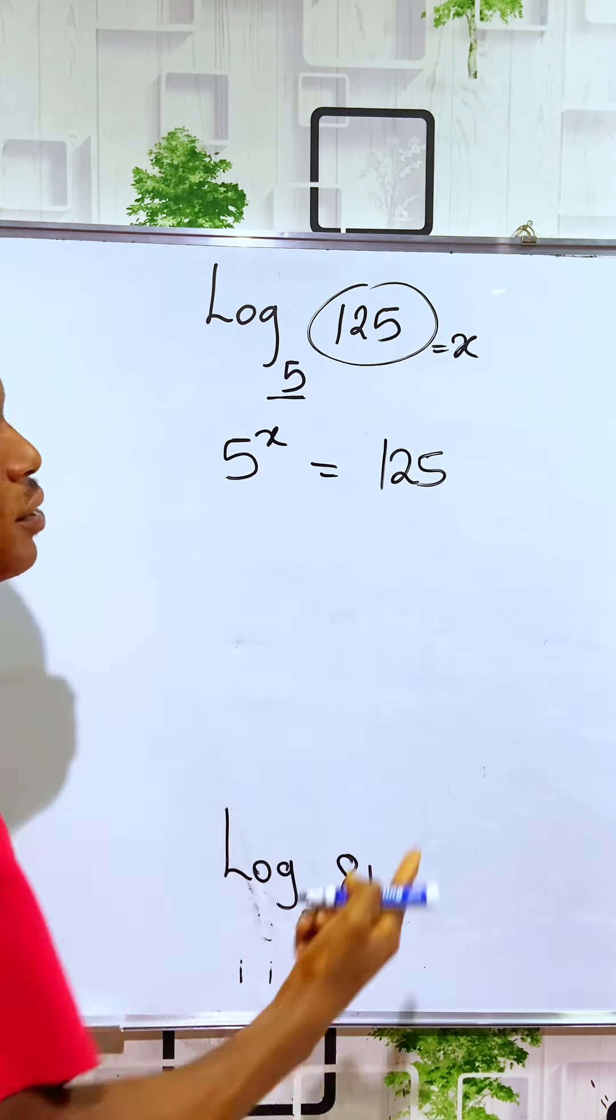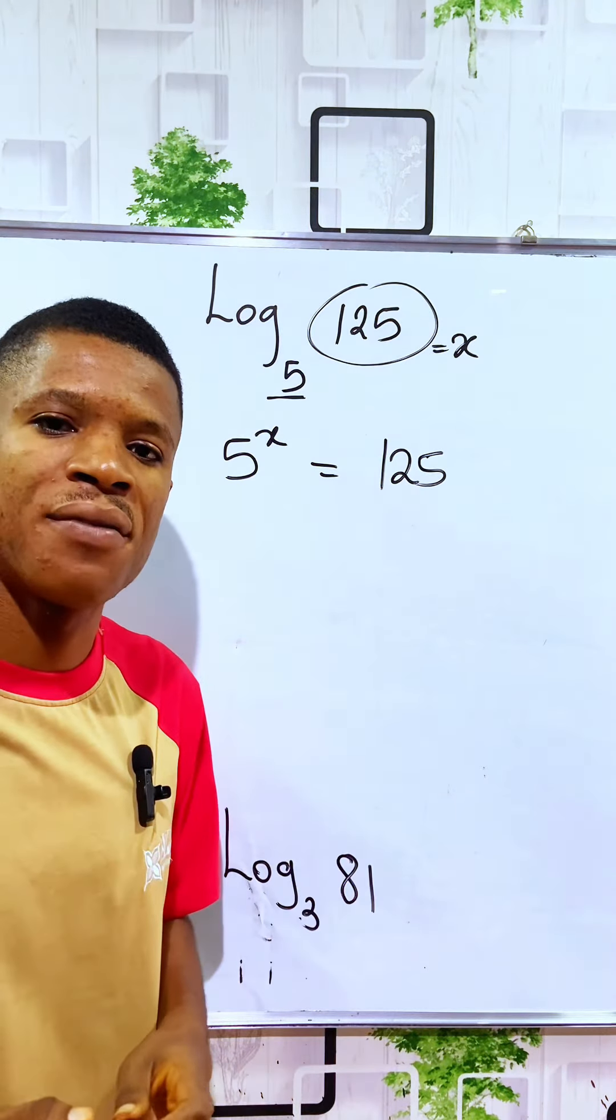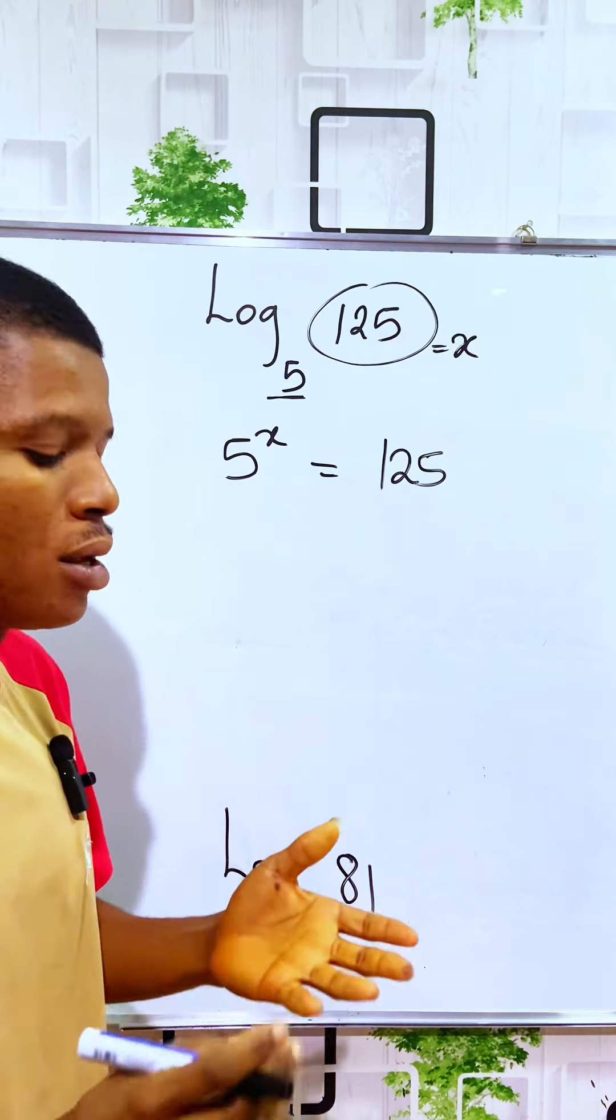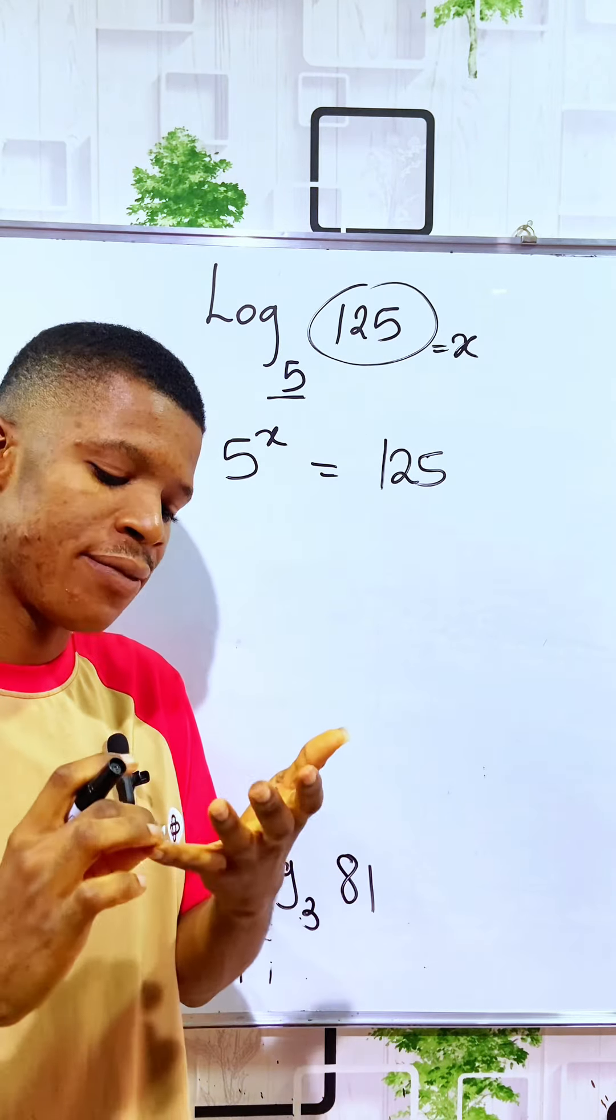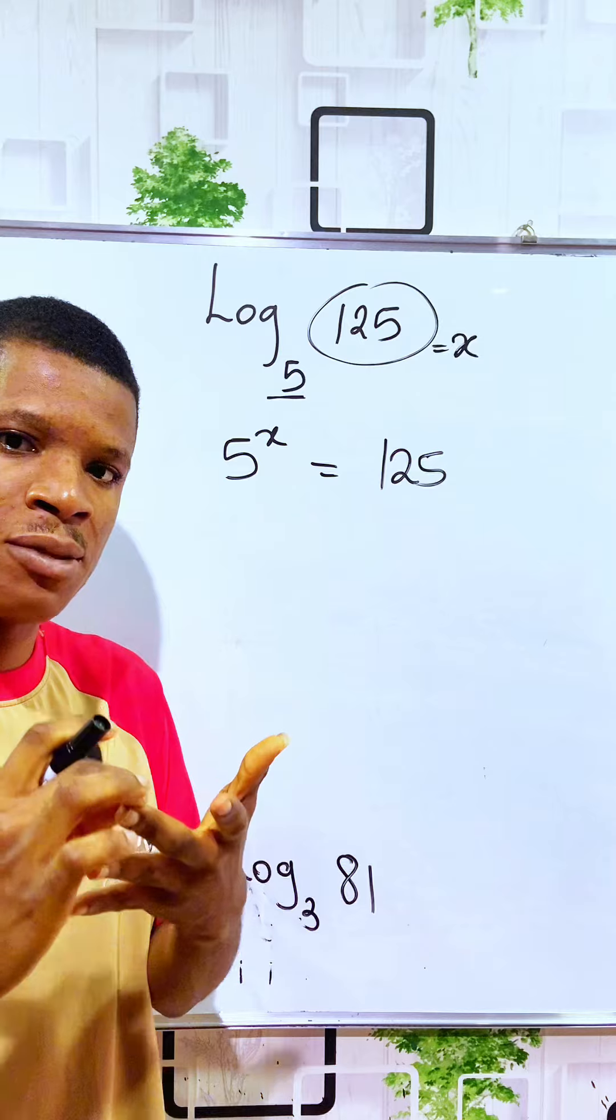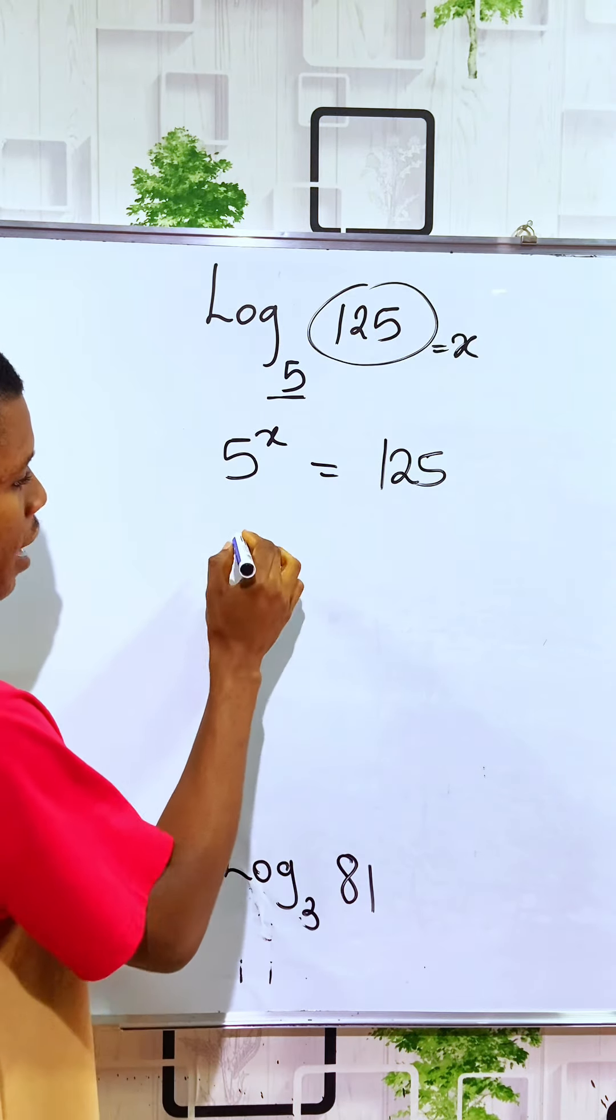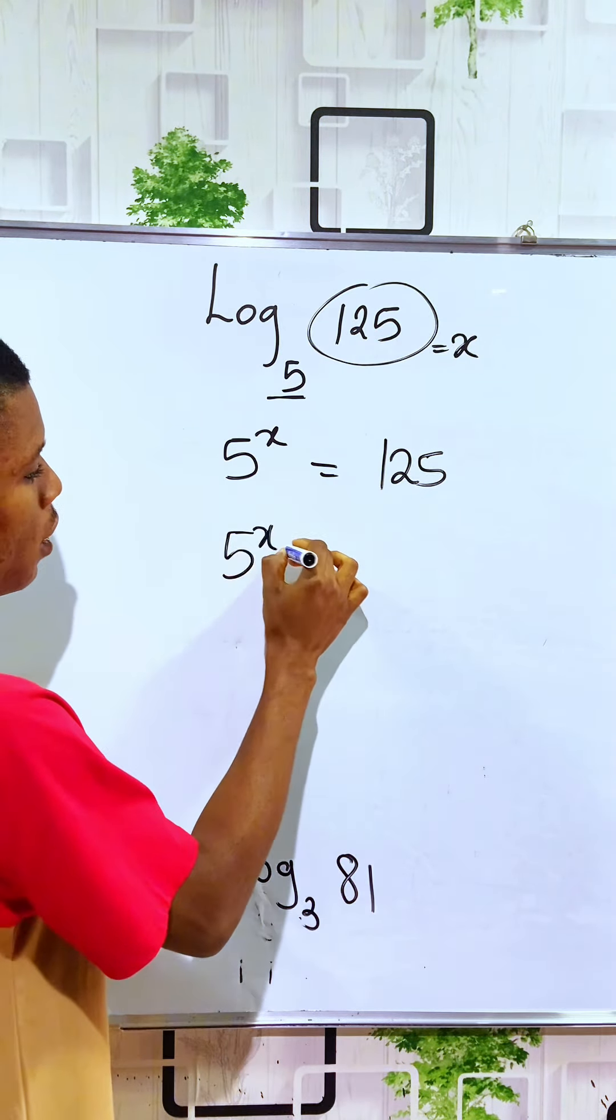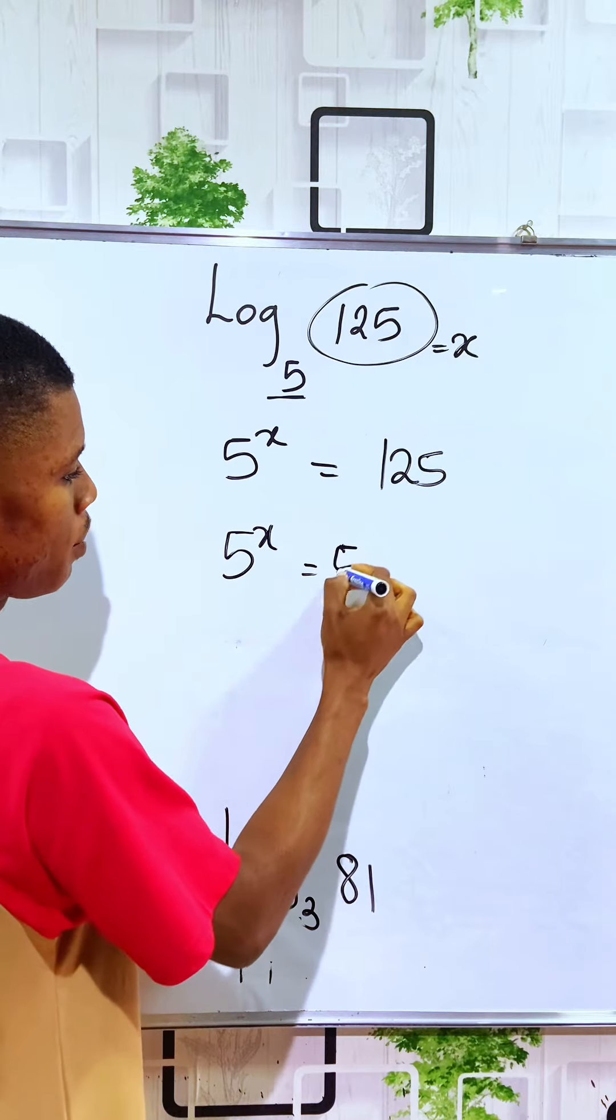Observe that 125 and 5 can be expressed in a common base. Remember, 125 is 5 times 5 is 25, times 5 is 125, giving you 5 to the power of X is equal to 5 to the power of 3.